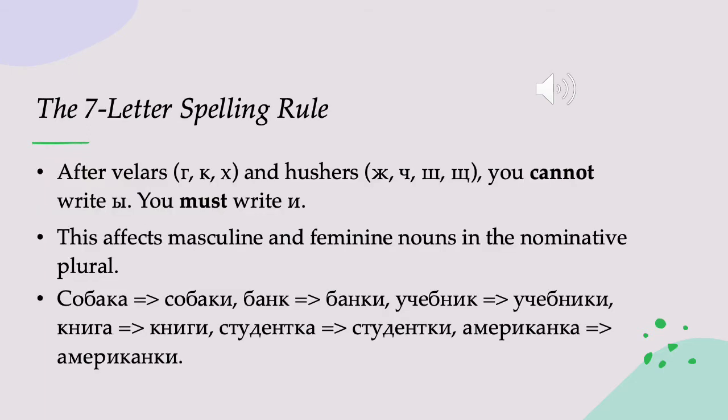Before going any further, we should talk a little bit about the seven-letter spelling rule. There are three spelling rules in Russian, and our textbook has given them names based on the number of letters that they affect. These names are not commonly used in Russian — they're just used by our textbook — but they're very useful to know, and I will normally refer to them by the names that the textbook gives them. So this is the seven-letter spelling rule.